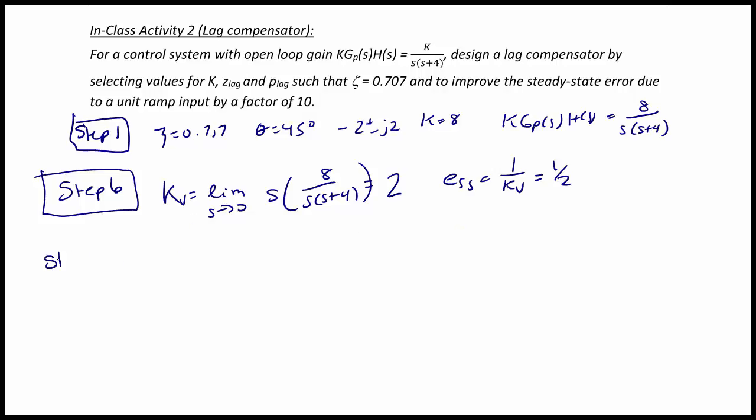And now step 7. For step 7, we are going to cascade our compensator with our open loop gain. So we're going to have k times gc of s times gp of s times h of s which equals 8 times s plus z lag over s plus p lag times 1 over s times s plus 4.